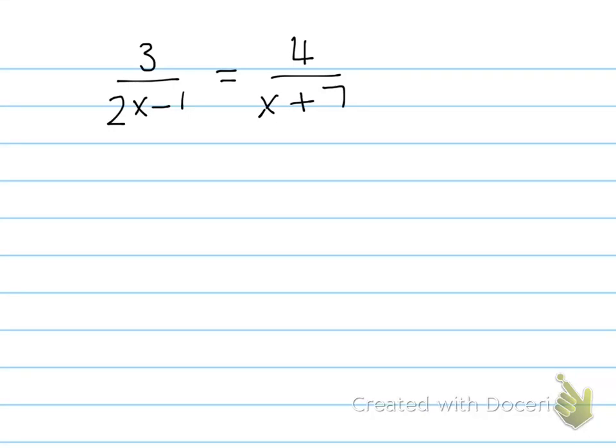Here we have an equation in terms of two rational expressions. The idea here is to multiply both sides of the equation by the lowest common denominator, which is the product of the two binomials: 2x minus 1 and x plus 7.